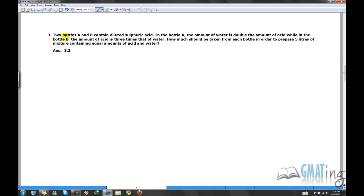So the question says 2 bottles A and B. We should start writing A and B here because that's our technique. So 1 bottle A and B contains diluted sulfuric acid. Let's write ratio, quantity and strength. Strength is amount of water is double the amount of acid. So if acid is 1, water is 2. So the strength would be 1 by 1 plus 2. That is 1 by 3.